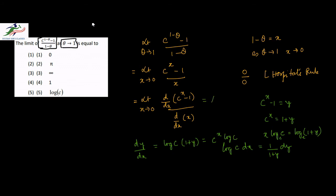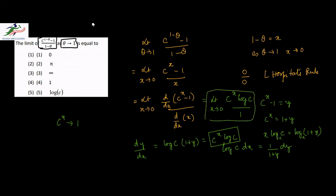So therefore the limit becomes limit x tending to 0 of c to the power x times log c, over 1. Now we put x equal to 0: c to the power 0 is 1, so the limit equals log c. So option 5, which is log c, is the correct choice. Thank you.